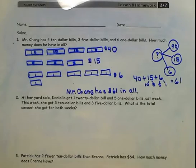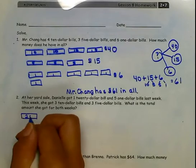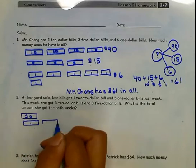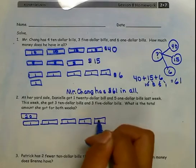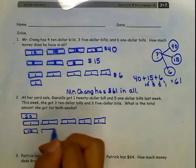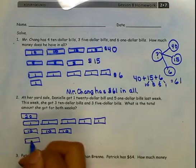I need to figure out what Danielle got from last week, then from this week, in order to find the total. So I'm going to draw: she had one $20 bill, five $1 bills, three $10 bills, and three $5 bills.